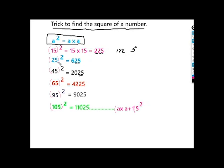When you look at 25 squared, it means 5 squared is 25. 2 times 3 is 6. So 25 squared is 625.